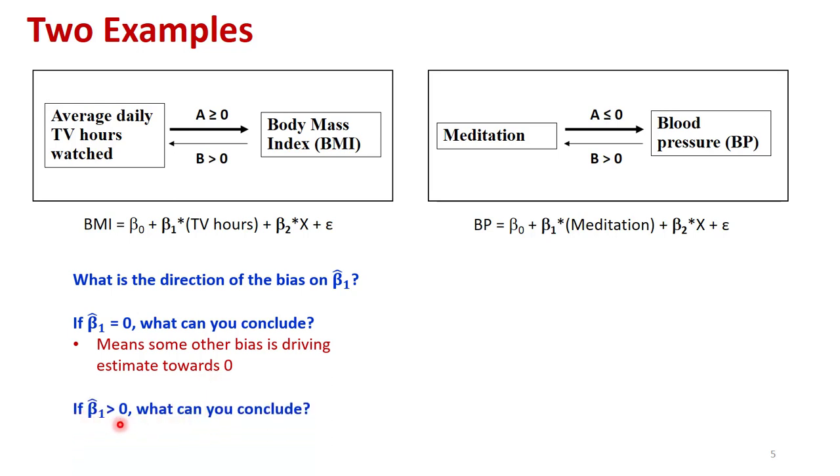What if beta one hat is greater than zero, what can you conclude? Here the answer is nada. You have no idea if the positive coefficient estimate, meaning that the two variables are moving together positively, would be coming from the effect that you're trying to capture, TV affecting BMI, or the reverse causality, BMI affecting TV. You can't determine that.